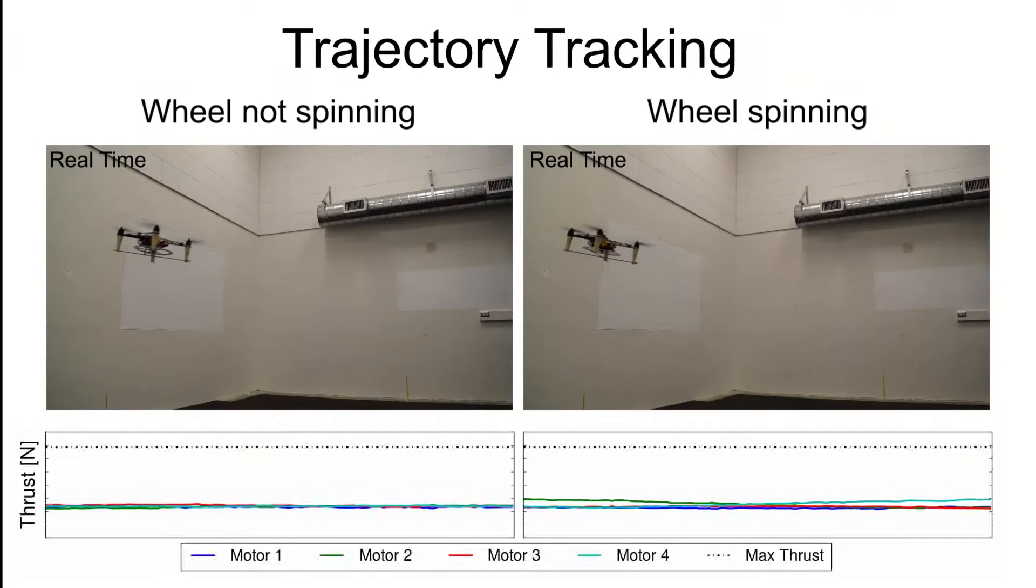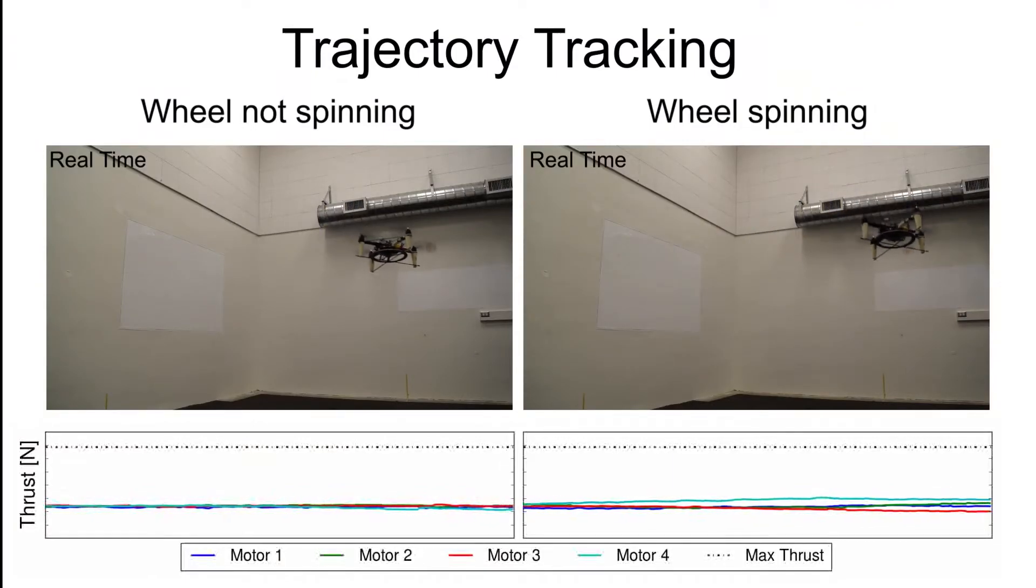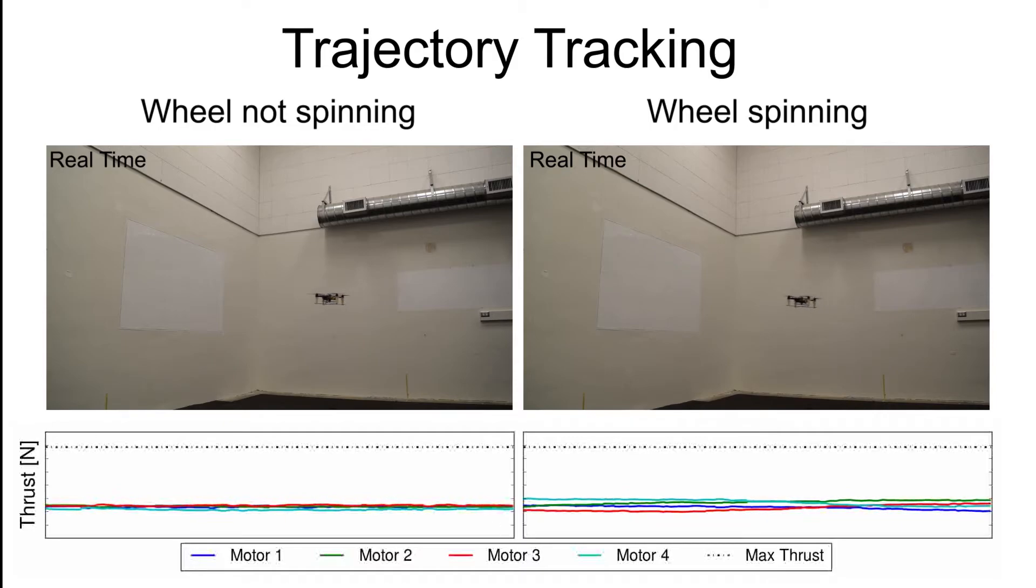Additionally, the wheel does not significantly affect the agility of the vehicle. While following simple trajectories, we observe similar tracking errors whether the wheel is spinning or not.